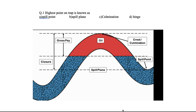Question one: what is the highest point on a trap? We have four options: spill point, spill plane, culmination, and hinge. The highest point is called Crest and Culmination. So the right answer is Culmination. Both Crest and Culmination are correct terms for this.